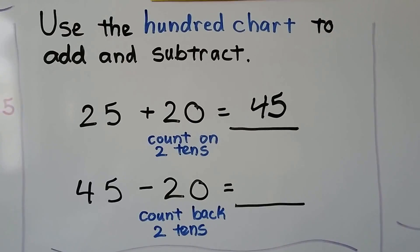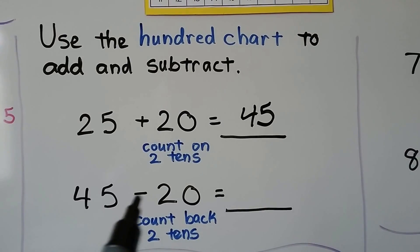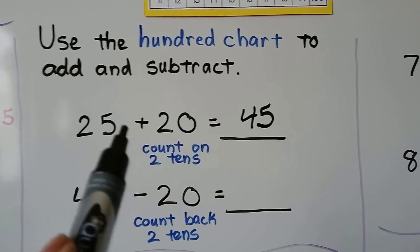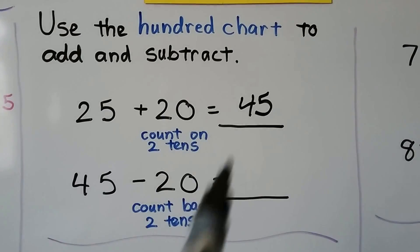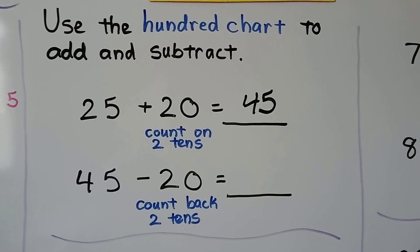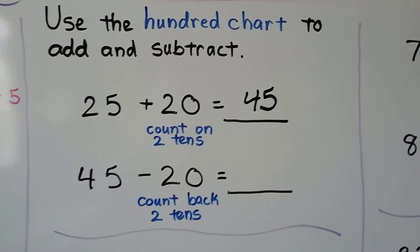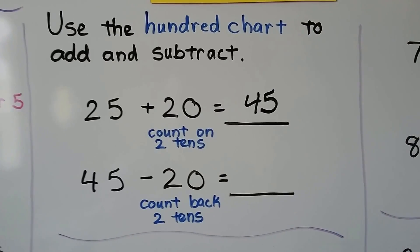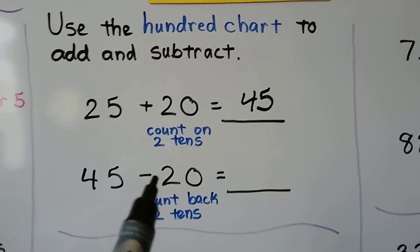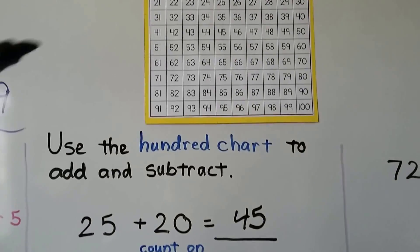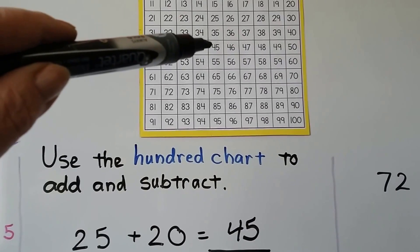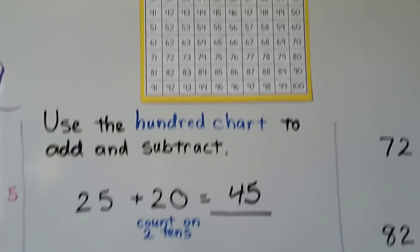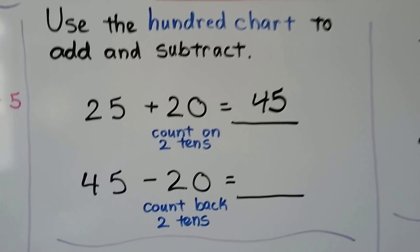We can also do the subtraction sentence: 45 minus 20. Just from looking at these two number sentences and knowing that there are related facts, we can use the 100 chart and count back two tens. We find the 45 and count back two tens, which brings us back to 25 — the addend in the addition sentence.